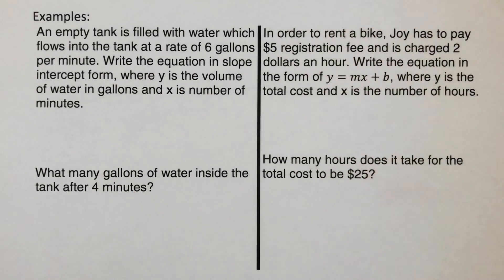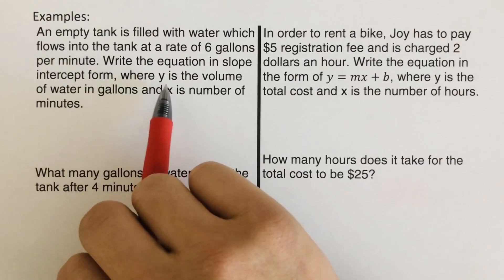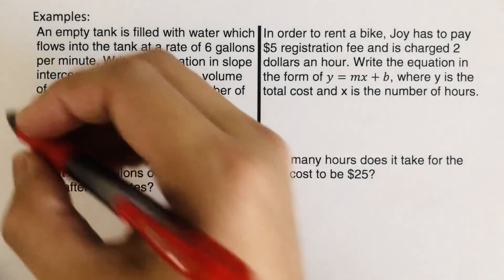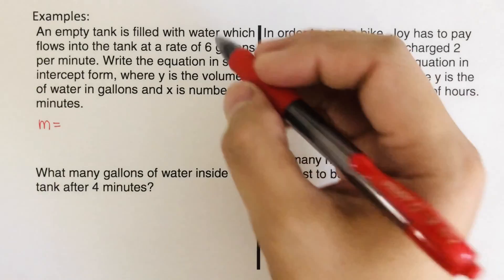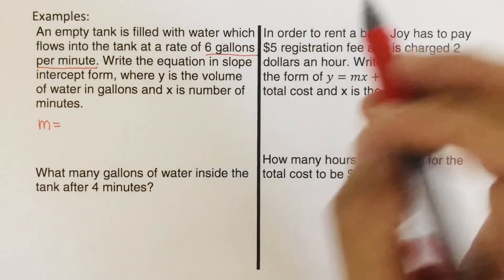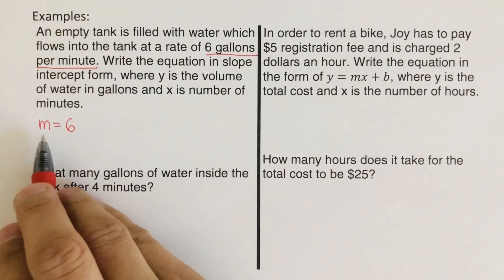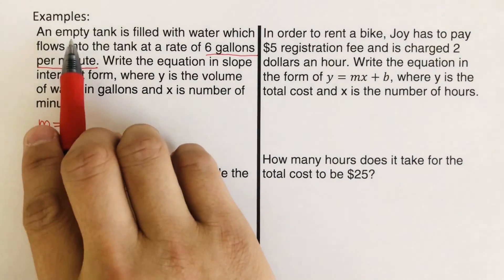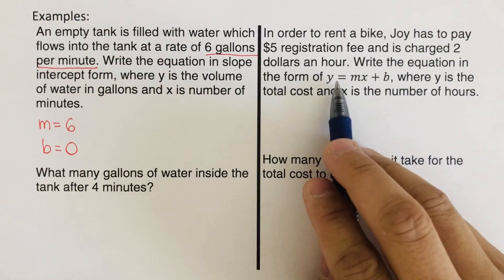So we go over the next problem. An empty tank is filled with water which flows into the tank at a rate of 6 gallons per minute. Write the equation in slope-intercept form where y is the volume of water in gallons and x is the number of minutes. We determine m and b: m is the growth factor — 6 gallons per minute — so m is 6. The starting value is 0 since the tank is empty, so b is 0. The equation is y equals 6x.